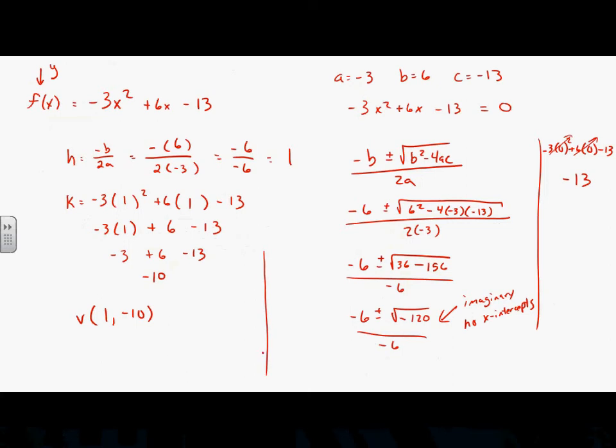One more thing before graphing — the axis of symmetry. A parabola always has symmetry, but instead of across the y-axis, it's across a vertical line through the middle called the axis of symmetry. This is always an equation: x equals whatever the x-coordinate of the vertex is. Since our vertex is (1, −10), the axis of symmetry is x equals 1. This means anything that happens to the right of x equals 1 also happens to the left, giving us extra points by symmetry.